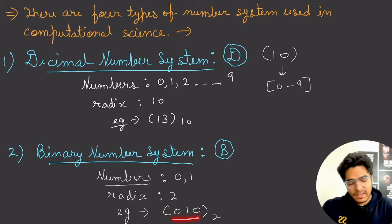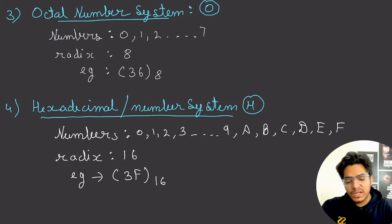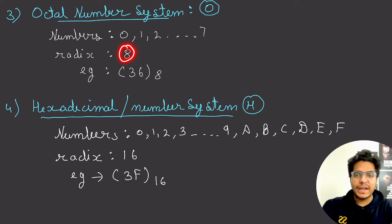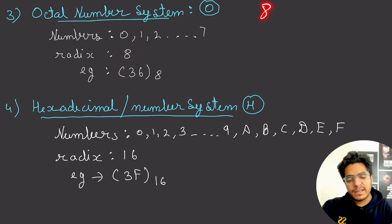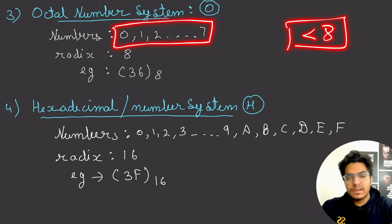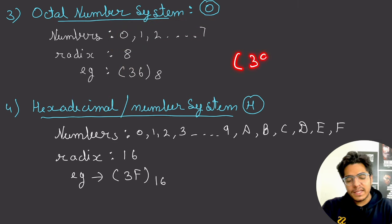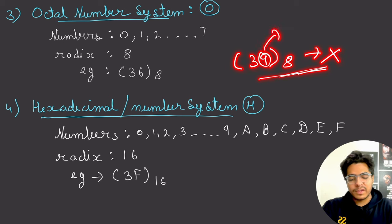The octal number system has base 8. So digits can range from 0 to 7 only — no number equal to or greater than 8 is allowed. For example, 3 is valid in octal, but 9 is not, because 9 is greater than 7.